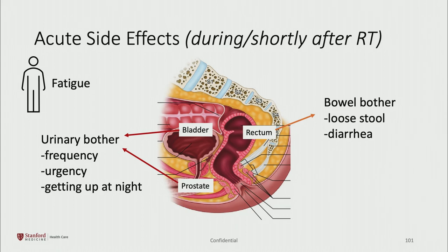Short-term side effects from radiation are those that most patients experience at some point during treatment. These include generalized fatigue and side effects due to irritation of local organs. For bladder irritation, patients typically describe urinary frequency, urgency, and having to get up more at night to urinate. For bowel or rectal irritation, patients typically describe looser stool or diarrhea.